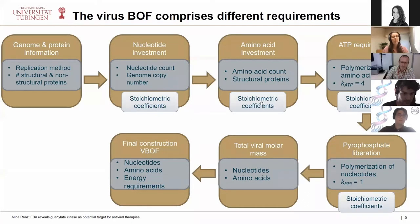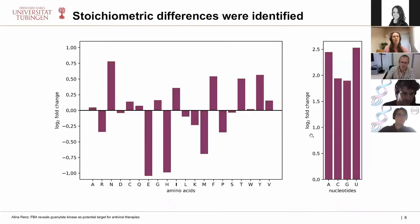With all those calculations we were able to calculate the total viral molar mass including nucleotides and amino acids, and from this calculate the stoichiometric coefficients for nucleotide investment, amino acid investment, ATP requirements, and pyrophosphate liberation. With those stoichiometric coefficients we constructed the final viral biomass objective function. Our model now has two biomass objective functions: the host maintenance function and the virus biomass objective function.